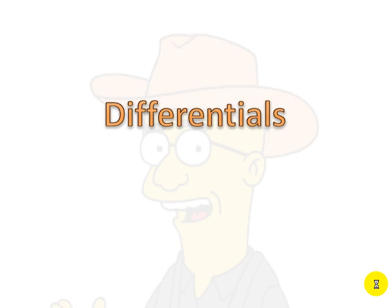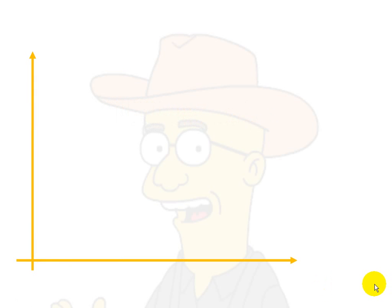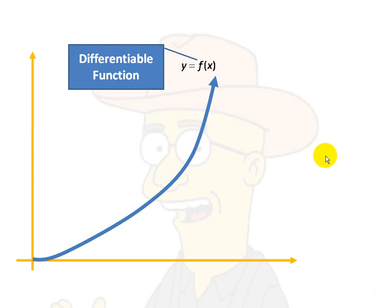Now, let's start off by defining the differentials by way of looking at a graph. And let's suppose we have this differentiable function. And I'm going to draw a secant line passing through the points f of x and f of x plus delta x.